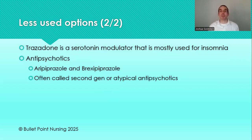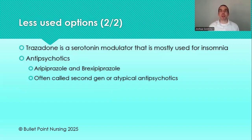Trazodone is often labeled as a serotonin modulator or atypical antidepressant. It modulates serotonin levels and also has a major aspect of inhibiting histamine — similar to antihistamines like Benadryl causing sedation. This medication is often used off-label for insomnia — in fact, it's our go-to example when teaching about off-label use in nursing school. Trazodone is used more off-label than for its labeled indication of depression, and it frequently appears in hospital PRN standing orders specifically for insomnia.